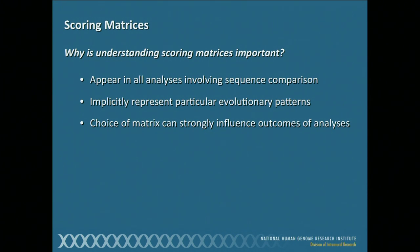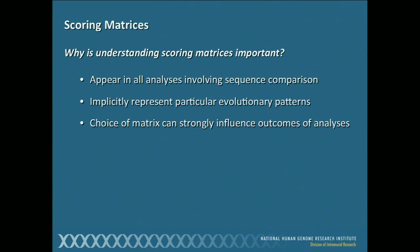Why should you care about any of this? Anytime you do any sort of sequence comparison — when you do a BLAST search, a multiple sequence alignment, any kind of comparison like this — in the background, these scoring matrices are being used. The choice of scoring matrix becomes very, very important because they implicitly represent particular evolutionary patterns. Depending on which one you choose, or not choose because you've decided to use the default values, it can strongly influence the outcomes of your analyses. The default options may not always be the best choice.